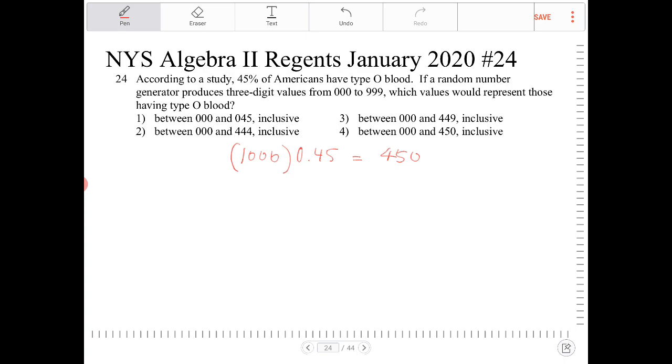Option 3 would be 450 numbers, which is exactly what we're looking for. Option 4 would be 451 numbers, because 000 is one number representing one person, up to 450, that would mean we have 451 individuals. So option 3 is the only one that makes sense.